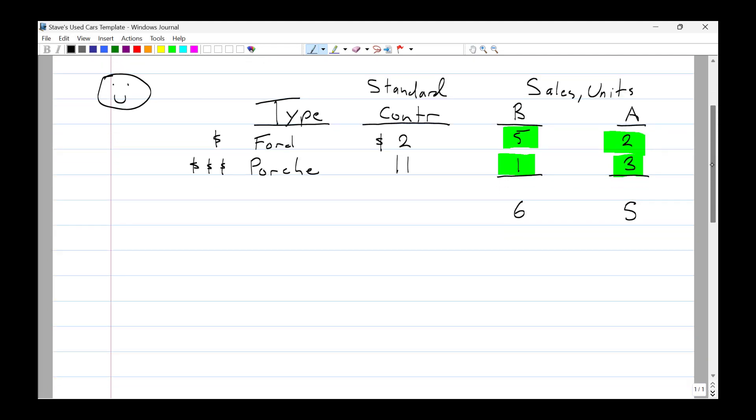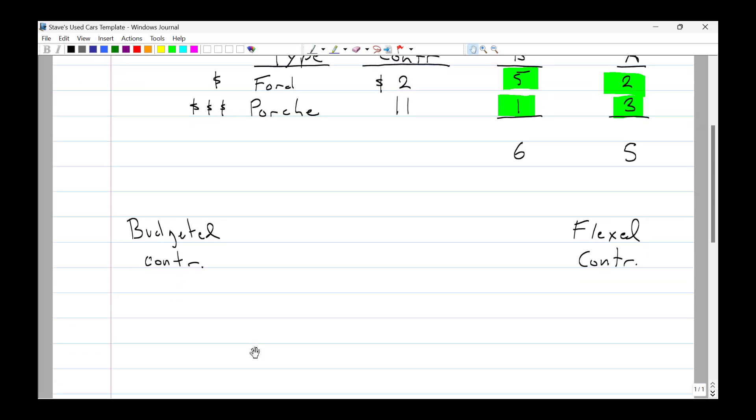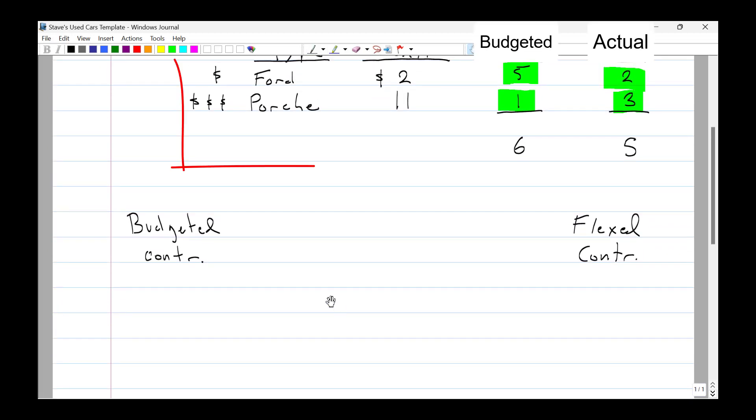On our journey to understanding the sales mix and the sales quantity variances, we are going to review the sales volume variance calculations. We need two items: a budgeted contribution and a flexed contribution. We have two products, Fords and Porsches. We have a standard contribution for each item: $2 for the Ford, $11 for the Porsche. And we've got budgeted units: five and one. So if we do the math, 10 and 11, the budgeted contribution is $21.